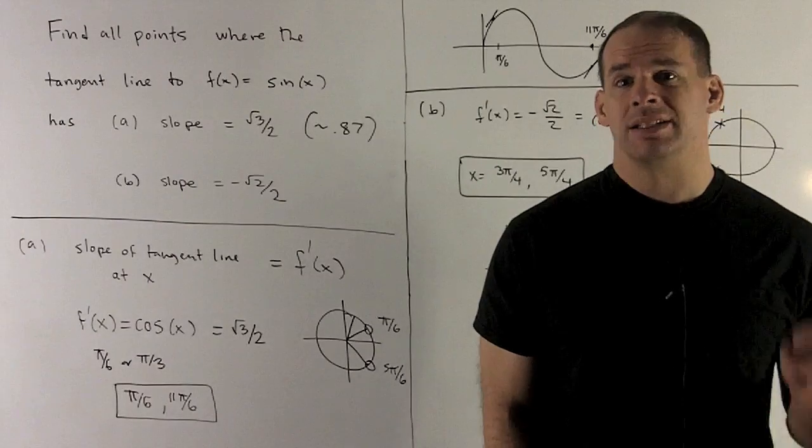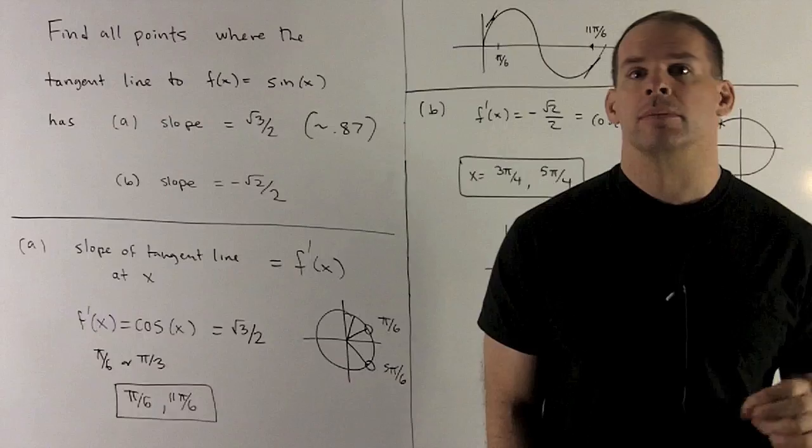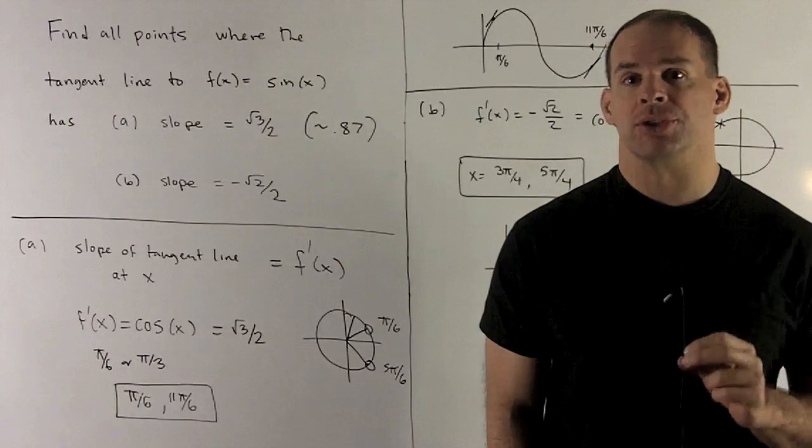Find all points where the tangent line to f of x equals sine of x has slope equal to square root of 3 over 2 and minus square root of 2 over 2.